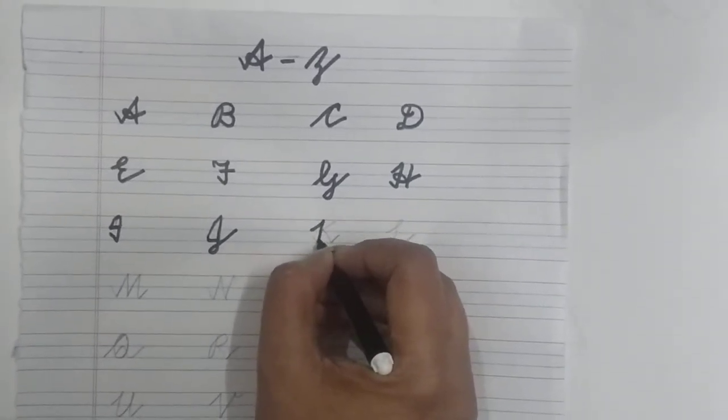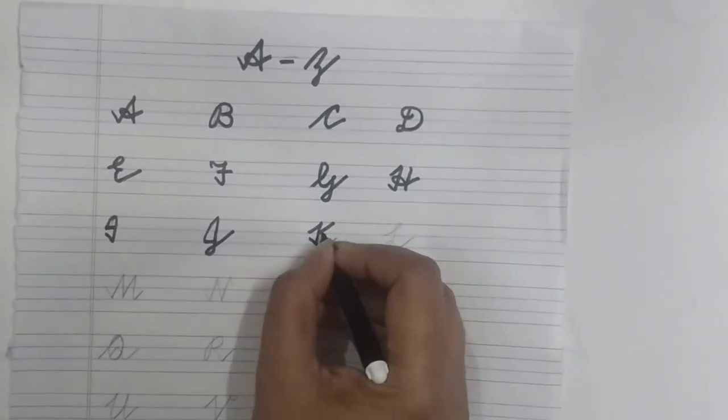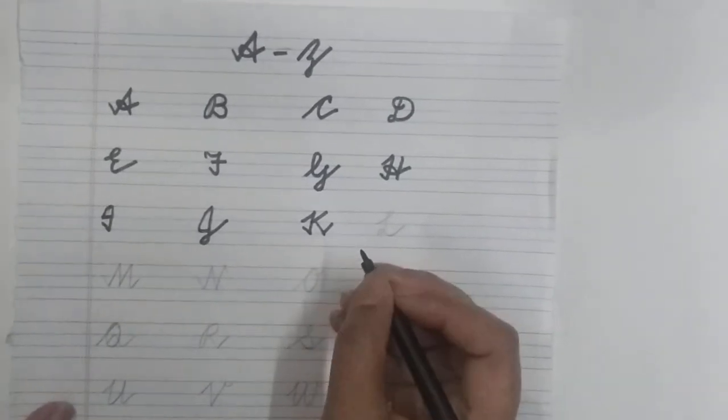Slanting line, come down, slant, again small slant. Slanting line, slanting line and small slant. K.